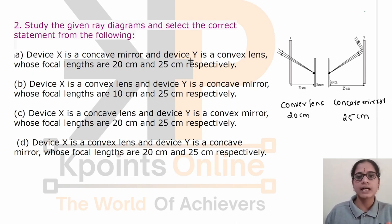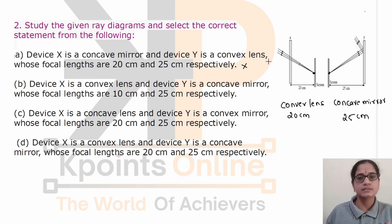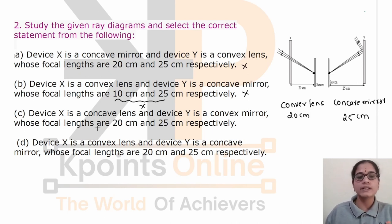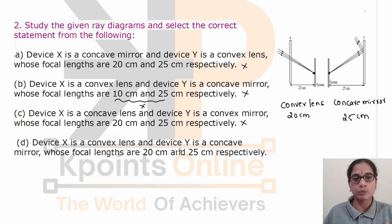Looking at the options: option A says device X is a concave mirror and device Y is a convex lens with focal lengths 20cm and 25cm — this is wrong, because X is a lens not a mirror. Option B says device X is a convex lens and device Y is a concave mirror with focal lengths 20cm and 25cm respectively — this is our correct answer.